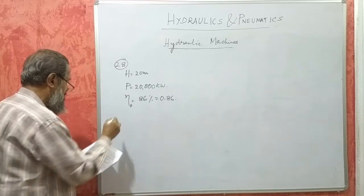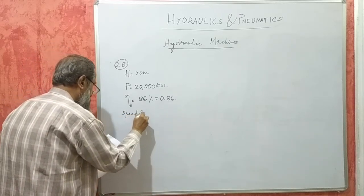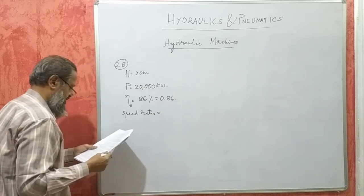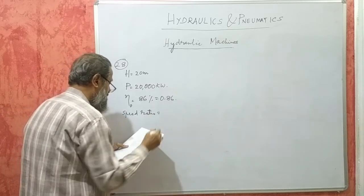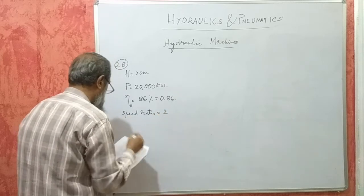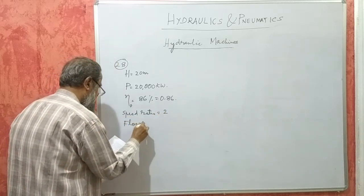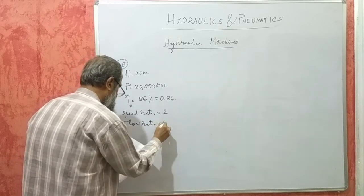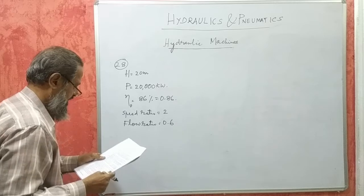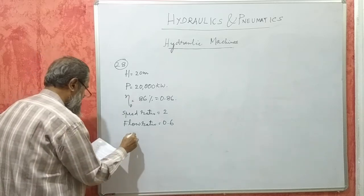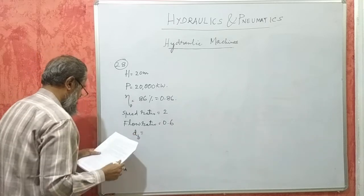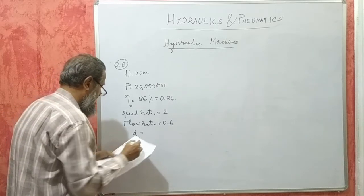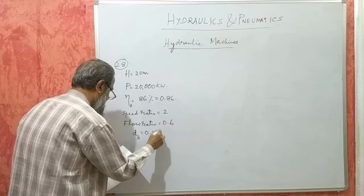The speed ratio is 2 and flow ratio is 0.6. The hub diameter, hub or boss it is called, is 0.35 times the diameter of the runner.